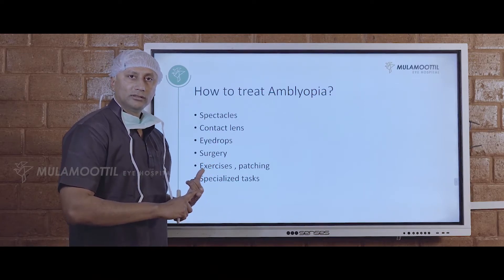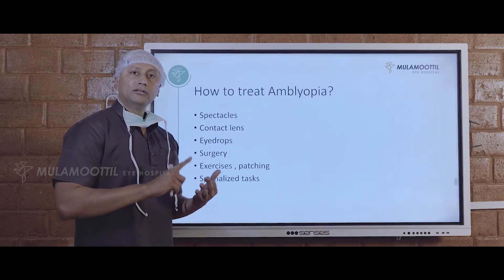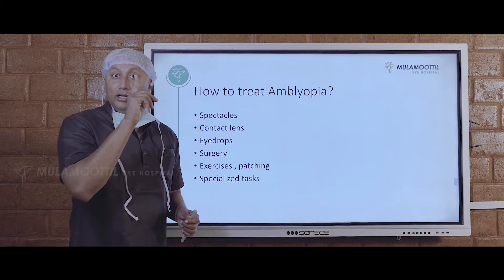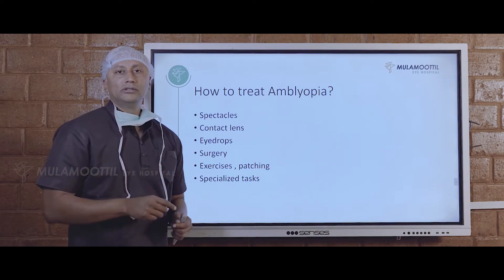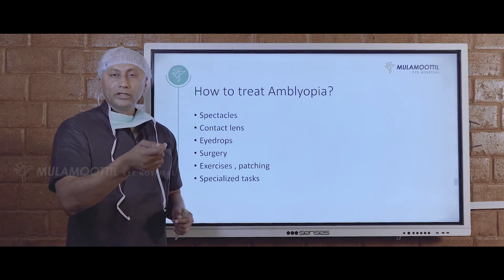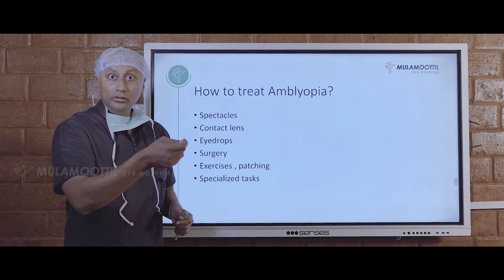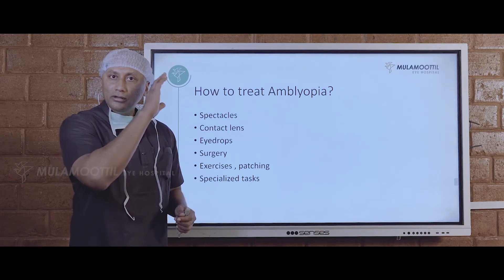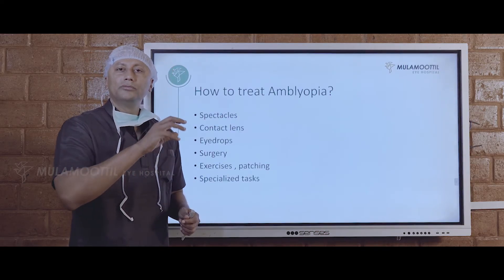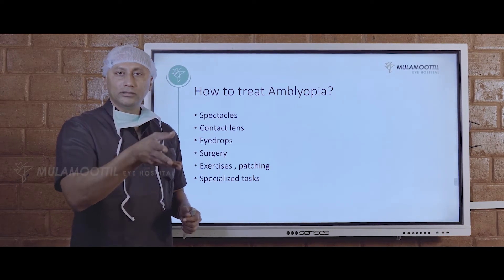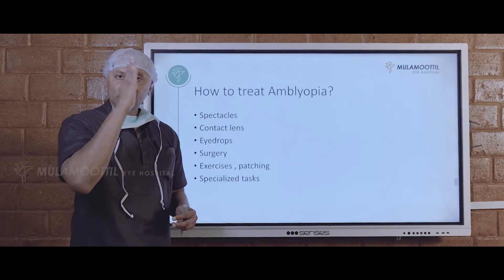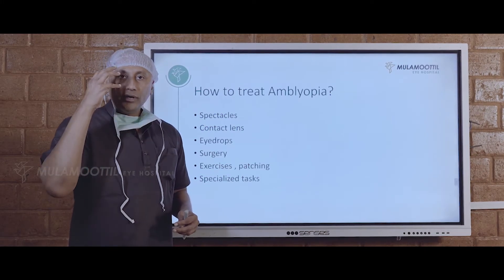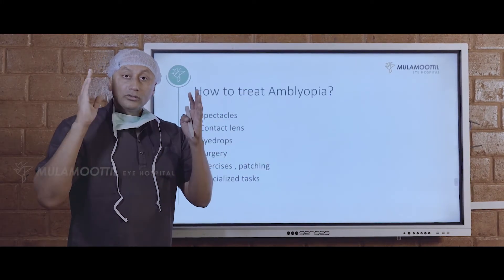Spectacles, exercises, and patching. Patching means we cover one eye and allow the other eye to see and do the work. We are exercising that eye more. When you exercise the eye more, the brain will rewire its connections, because the brain is very plastic. Then we shift to the other eye and make this eye work, so the brain can adapt to the functioning of this eye.